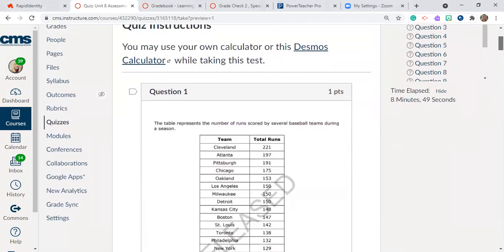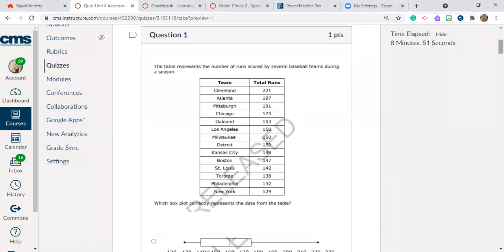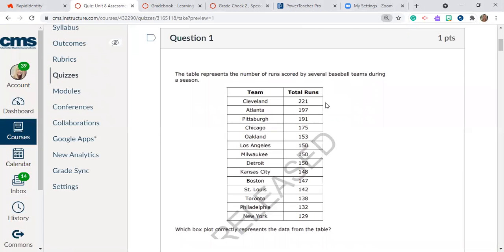Question number one. The table represents the number of runs scored by several baseball teams during a season. So we have the teams listed over here on the left and then we have their total number of runs scored on the right of the table.